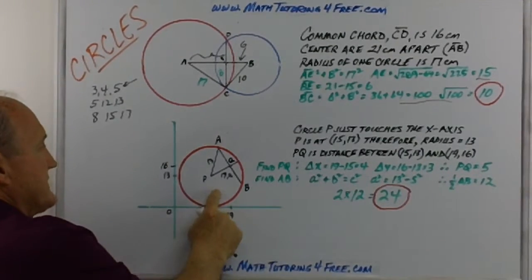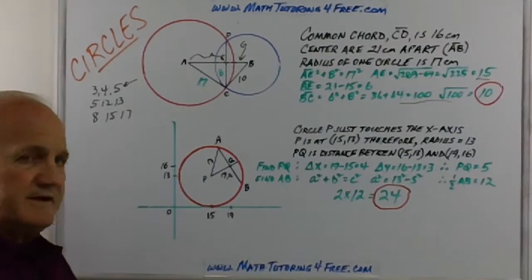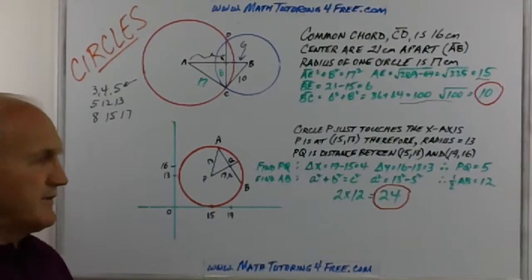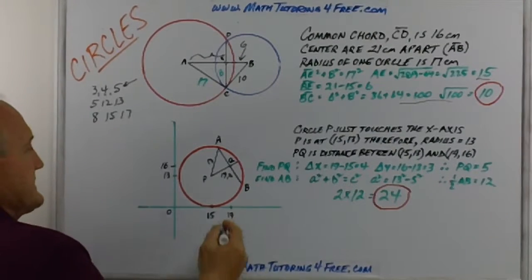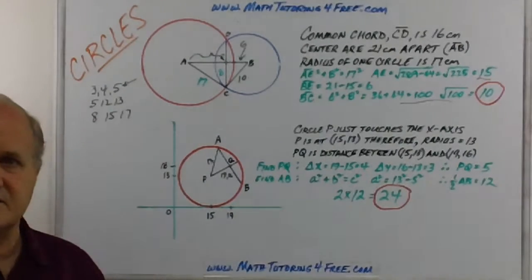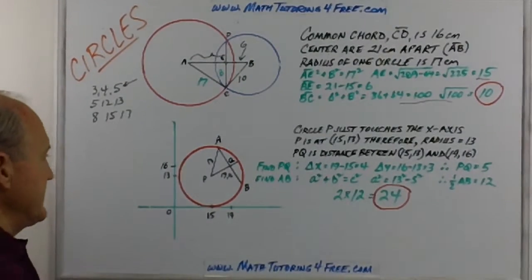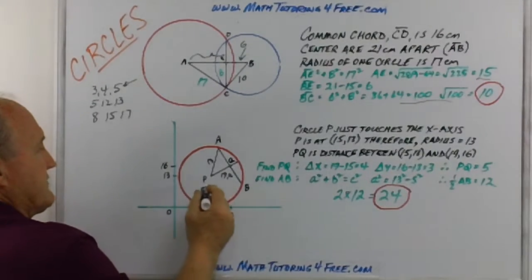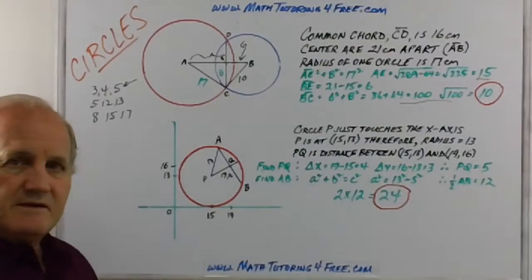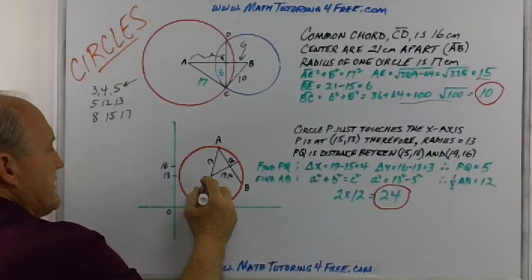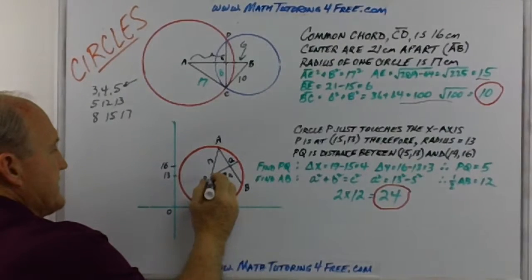This one is a little more difficult in that you have to find a distance between two points only knowing their coordinates. In this case, circle P just touches the x-axis. It gives us the coordinates for the center of the circle, which are (15, 13). If they're (15, 13), then I hope you can see that the y-value is going to be the size of the radius.